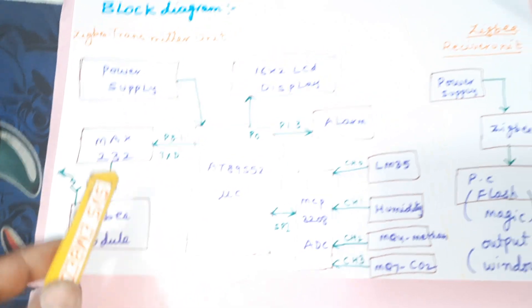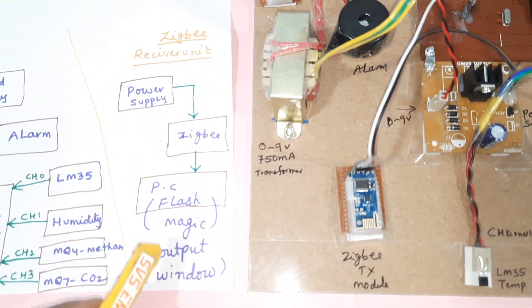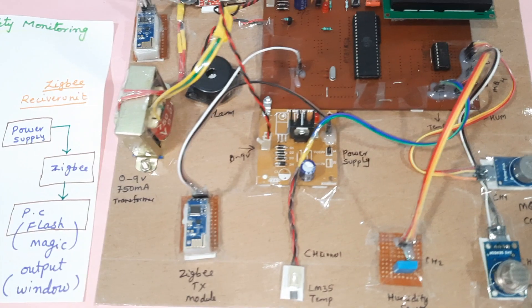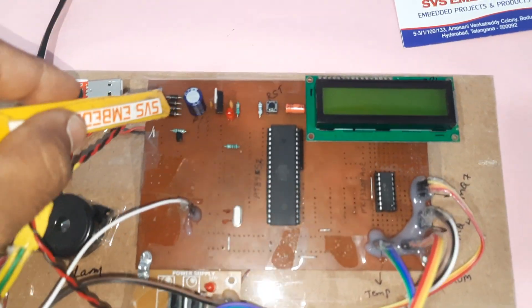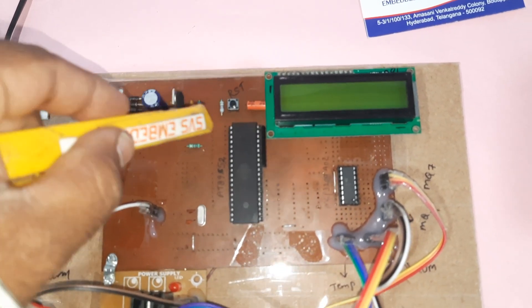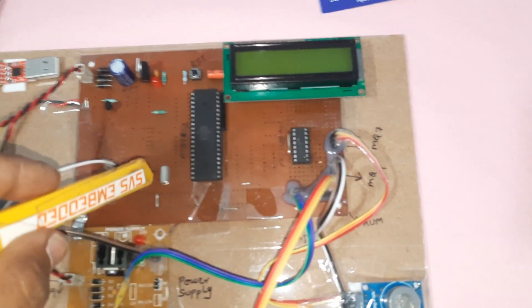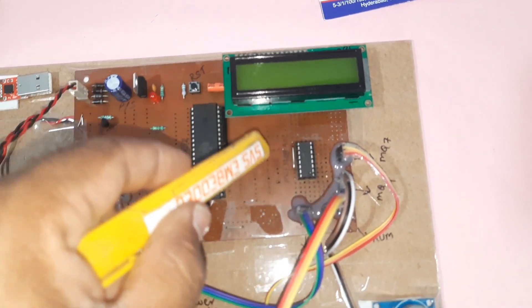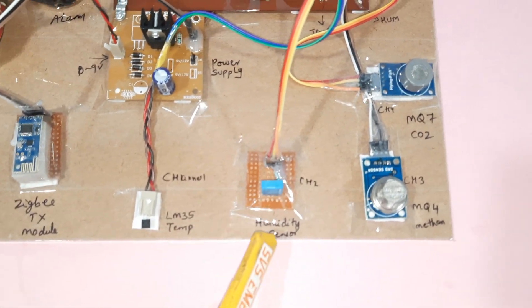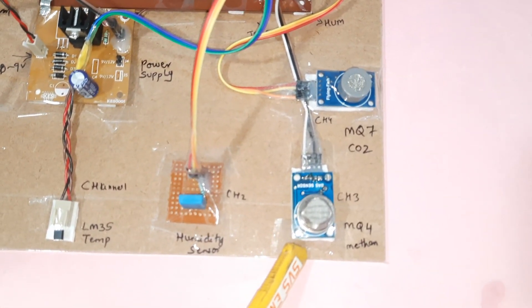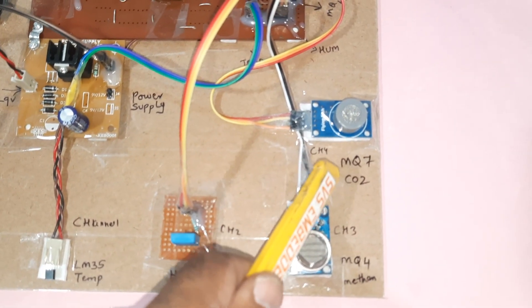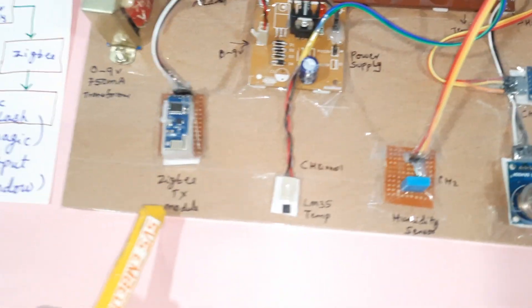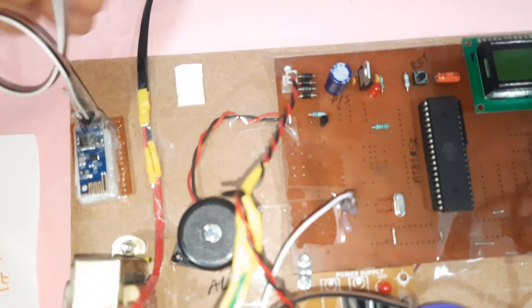The data is also sent to the ZigBee transmitter, and the receiver updates it onto the Flash Magic output. The receiver side uses a 0-to-9 volt transformer, bridge rectifier, filter capacitor, 7804 regulator, one LED, an 89C52 microcontroller, 16x2 LCD display, MCP3208 ADC, LM35 temperature sensor, humidity sensor, MQ4 methane sensor on channel 3, MQ7 CO2 sensor, and the ZigBee receiver connected to the ZigBee transmitter.